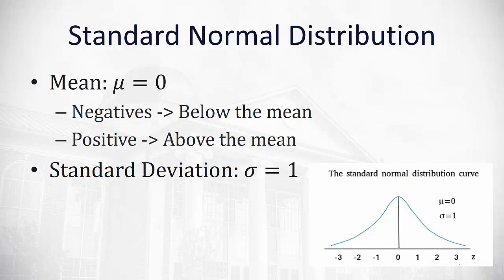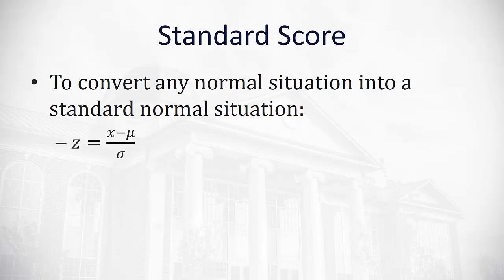The standard normal distribution is used so often that we have some specific calculations we can do to calculate the areas or probabilities underneath. But first let's talk about how we can find what's called a standard score, how we change any normal situation into a standard normal situation. We've already talked about this z-score: z equals the value we're interested in minus the mean divided by the standard deviation.